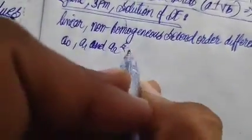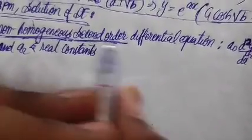We call this linear because you can observe the derivatives are decreasing from order two to one and stopping at y. We call this non-homogeneous because φ(x) is not equal to zero. We call this second order because the highest derivative for this differential equation is two. The constants a₀, a₁, and a₂ are multiplying the respective derivatives.